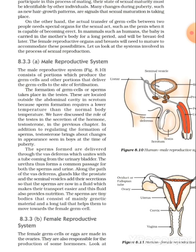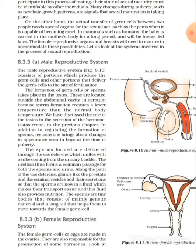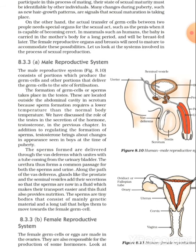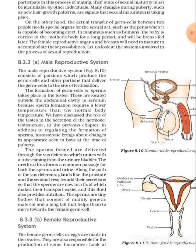The vas deferens unites with the tube coming from the urinary bladder, forming a common passage for both sperm and urine. The sperms are now in a fluid which makes their transport easier, and this fluid also provides nutrition.